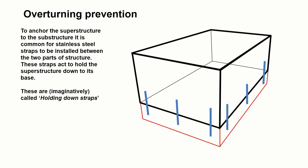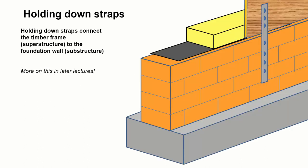To prevent this, we have to anchor the superstructure to the substructure. And the normal method within a timber frame is to use stainless steel straps which are fixed to the timber frame and fixed to the substructure. And they act to hold down the superstructure. And these are imaginatively called holding down straps. So they do exactly as their name suggests. And the holding down straps, we can see there, would be installed crossing the gap between the timber frame over the space where the DPC is and would be fixed down to the substructure. We'll give you a little bit more on that in future lectures.